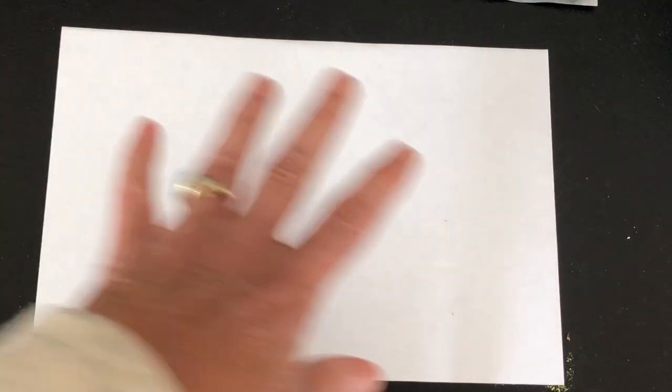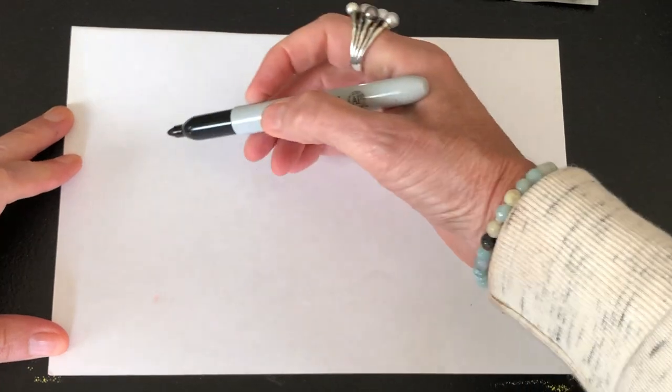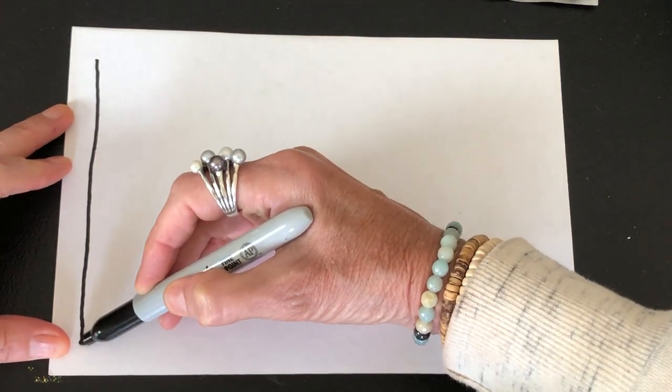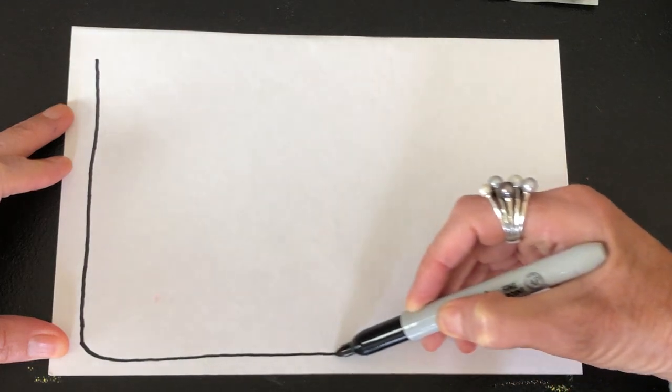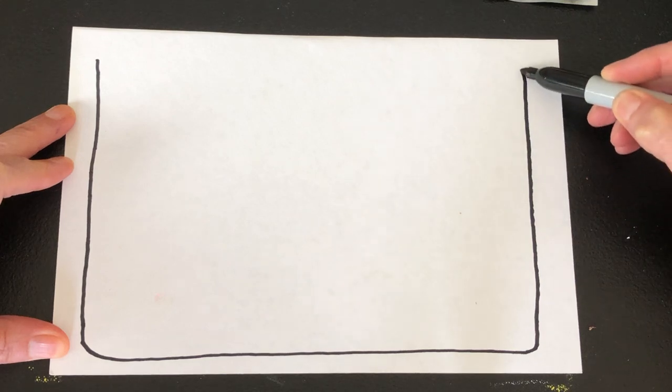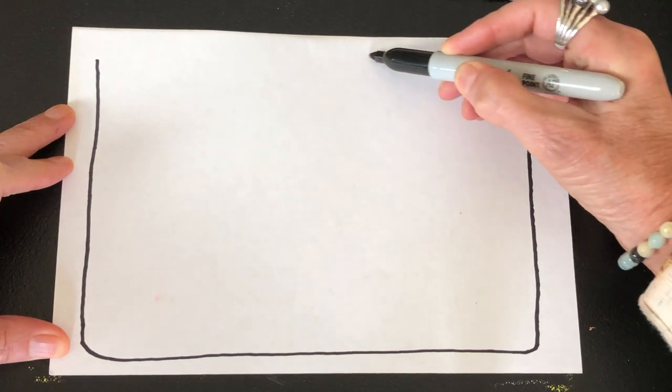The first thing you're going to do is turn your paper horizontally like that, and then step one is draw a line going around the perimeter or the edges of your paper to kind of make a border. Just go slow so it looks nice.